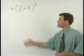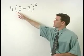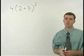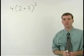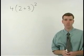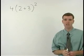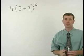This problem reads 4 times parentheses 2 plus 3 close parentheses squared. When you have a set of parentheses in an order of operations problem, you must simplify what's inside that set of parentheses first before you do anything else.